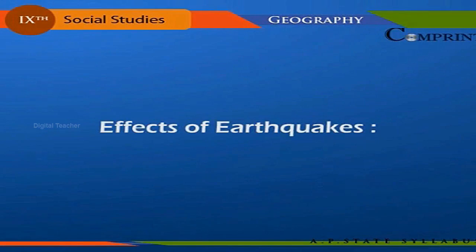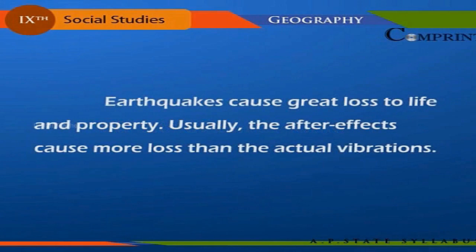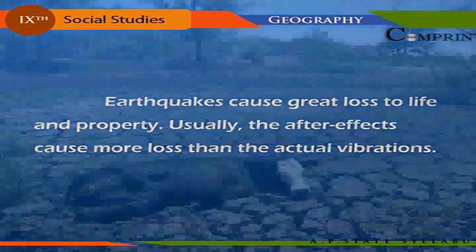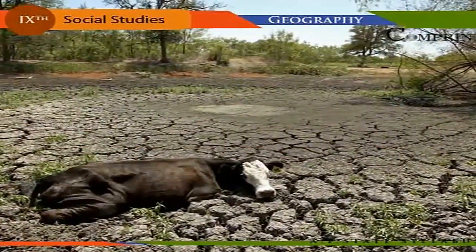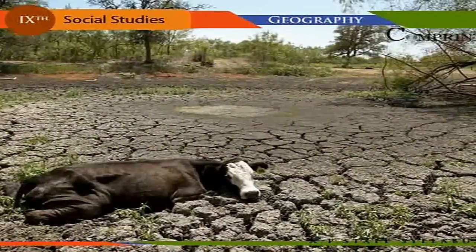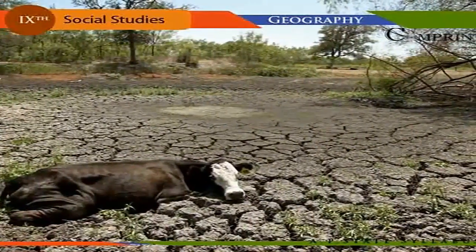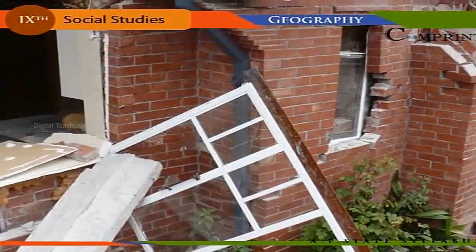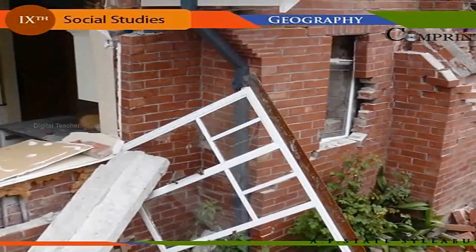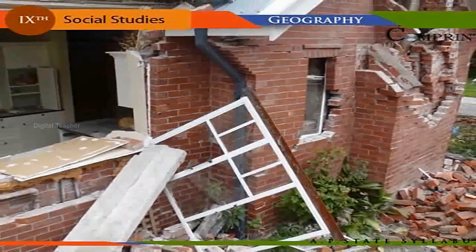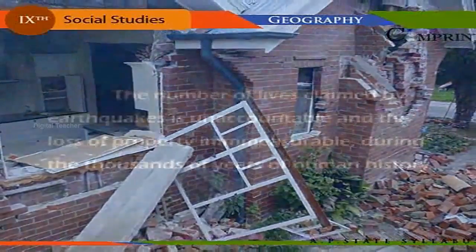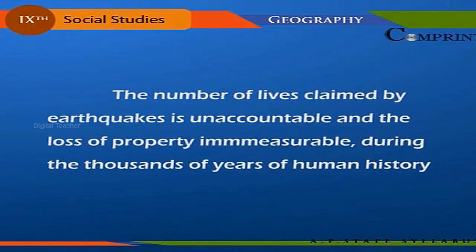Earthquakes cause great loss to life and property. Usually the after-effects cause more loss than the actual vibrations. Power and transport lines are cut off; rivers may change their course if their channels are blocked by hill slides. Some effects include: fire breakouts, wells drying up, mines and pipelines becoming inoperative, buildings collapsing, trees being uprooted, some areas being lifted while others sink, and fissures appearing on the ground.